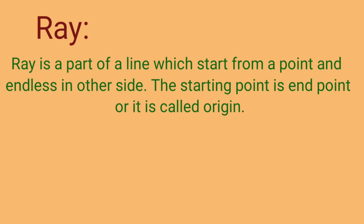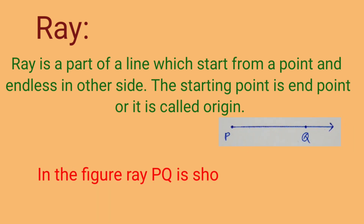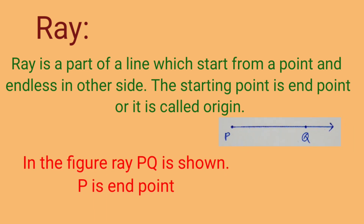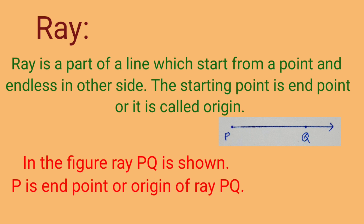Ray line ka ek part hoti hai jo ek point se start hoti hai aur dusre direction mein endless hoti hai, khatam nahi hoti. Ray ki starting point ko end point ya origin kehte hain. Figure mein ray PQ ko dikhaya gaya hai. P is the end point and origin of ray PQ.